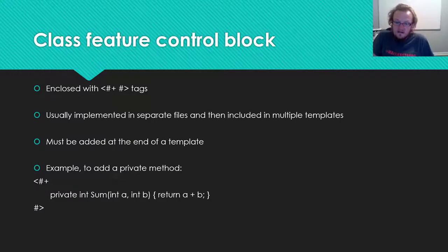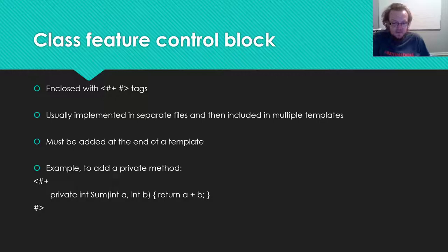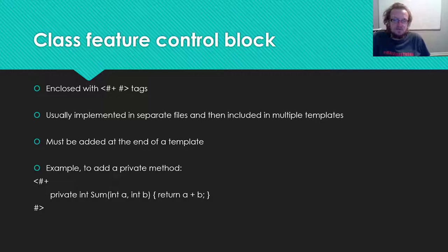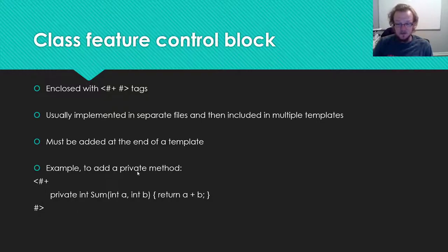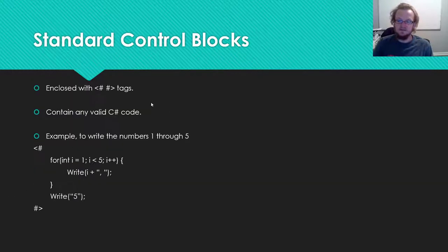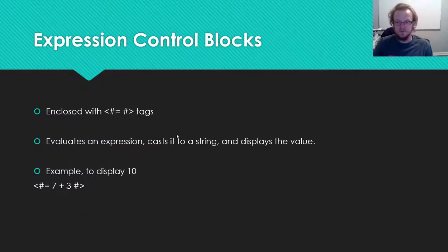You also have feature control blocks, which allow you to implement full methods — you can implement properties, whatever you want — inside of these special tags. I use these less than the other tags. Basically, all you need to do is insert valid C# implementation code between these tags, and then you can use that implementation inside some of the standard control blocks in other parts of the template.